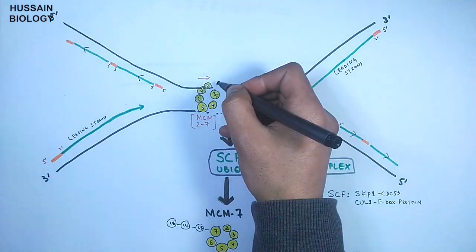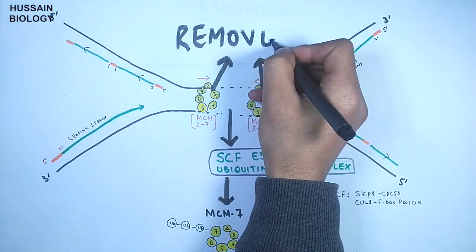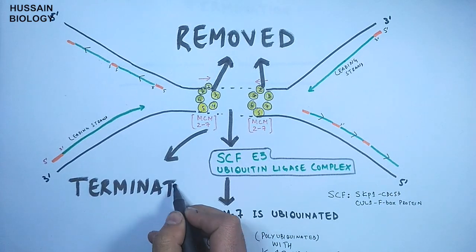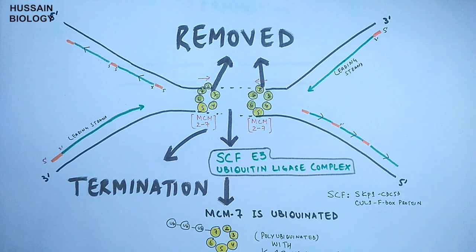Here you can see these MCM complexes or helicase complexes are removed off the strands and we get the DNA replication terminated. So this is all about replication termination in eukaryotes.